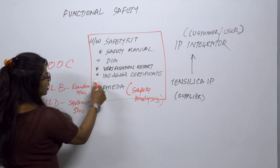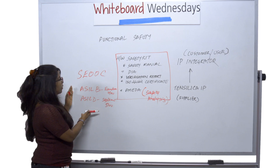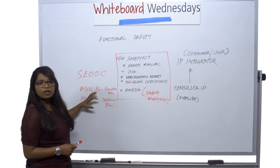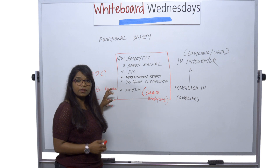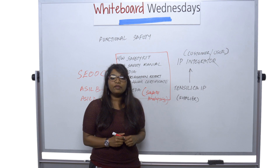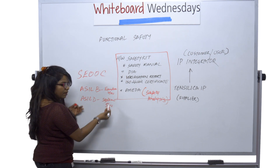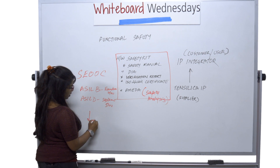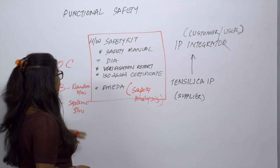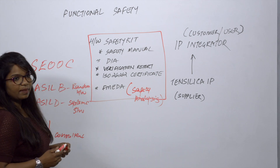Now, looking at how we arrive at the certificate: we have a set of metrics targeted for our SEooC development, and we completed everything the standard requires us to do. The standard also requires us to use an independent reviewer or auditor to perform a confirmation measure. Once our development was done, we used our consultant who verified our work and gave us an ISO 26262 certificate for ASIL-B random hardware and ASIL-B systematic software.